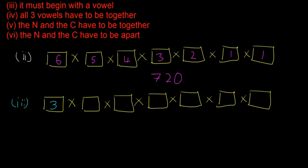After that, there are no more restrictions, so we fill in as normal. Even though there are three choices for the first box, only one letter is actually taken up, leaving six letters remaining. So we continue: three, six, five, four, three, two, one. Multiplying all of those together, the answer is 2,160.